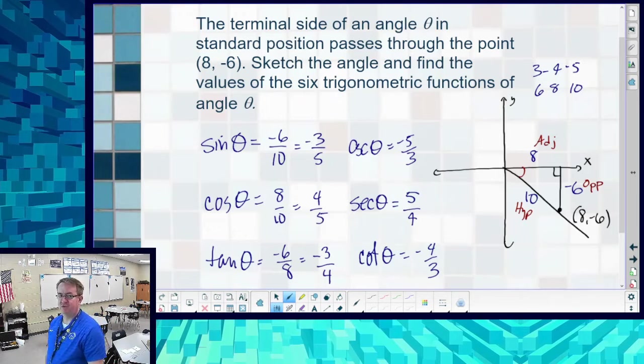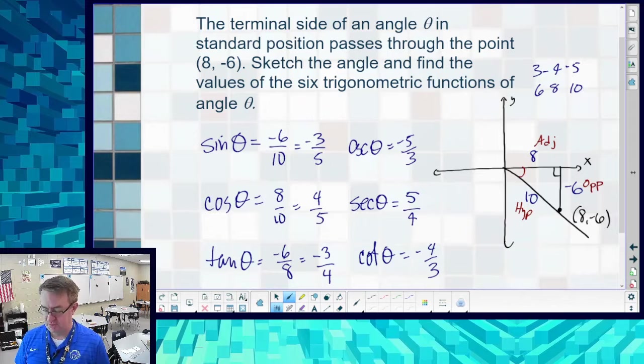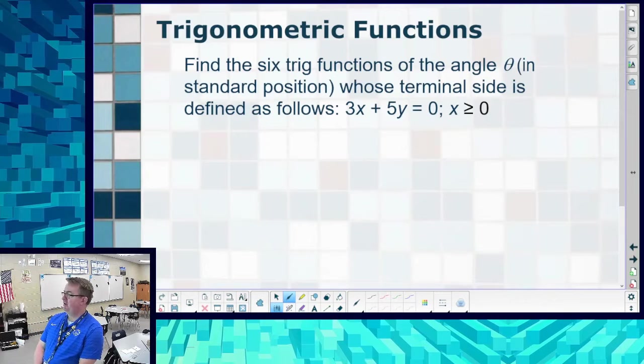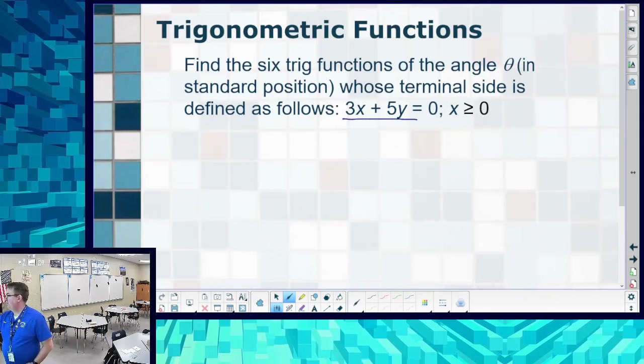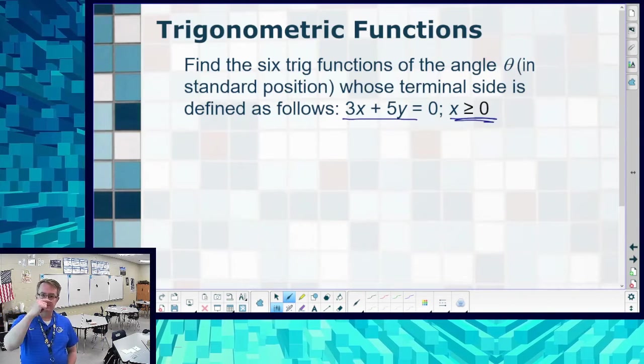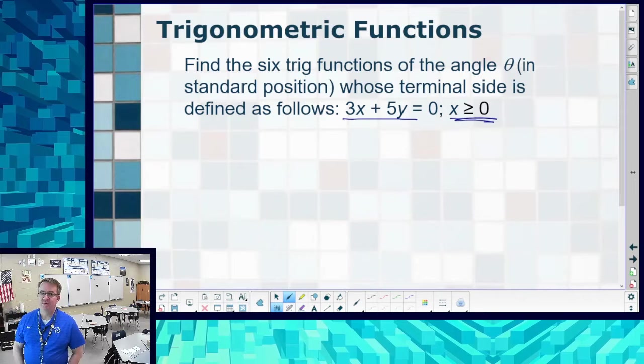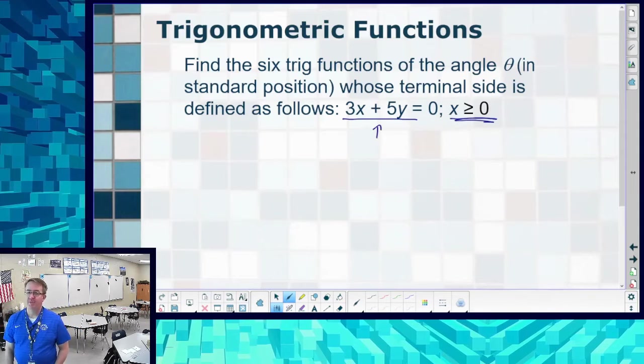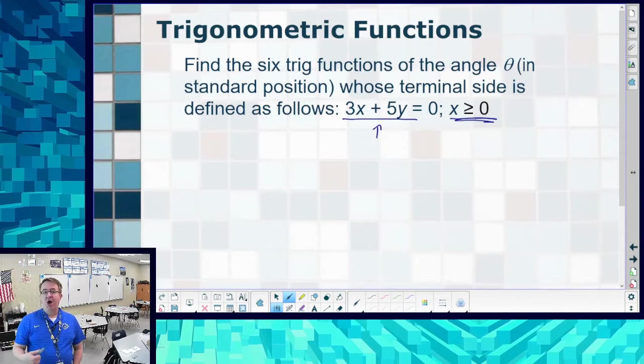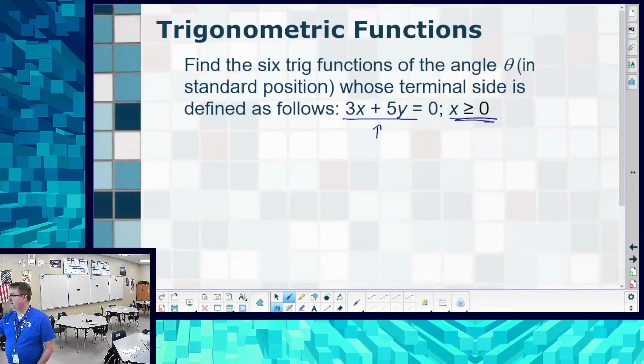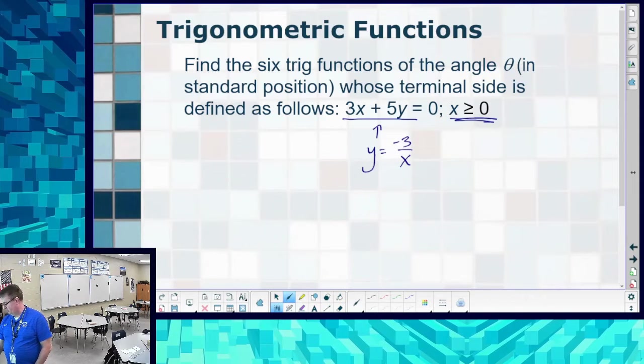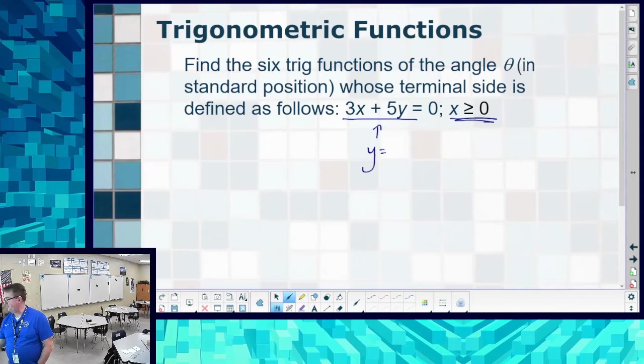One more example, then we're going to let you go off and just try some basics. Find the six trig functions of the angle who goes through this line, and x is going to be greater than zero. Why do we care about that? You'll see in a minute. Mr. Hayes, there's not a point. Whatever should we do? Yeah, but we got a line. Tell me more about this line. Remember I was talking about slope? Slope is rise over run. Oh wait, that's y over x. Correct. So if I solve this out, I'm going to get y equals -3/5 x.